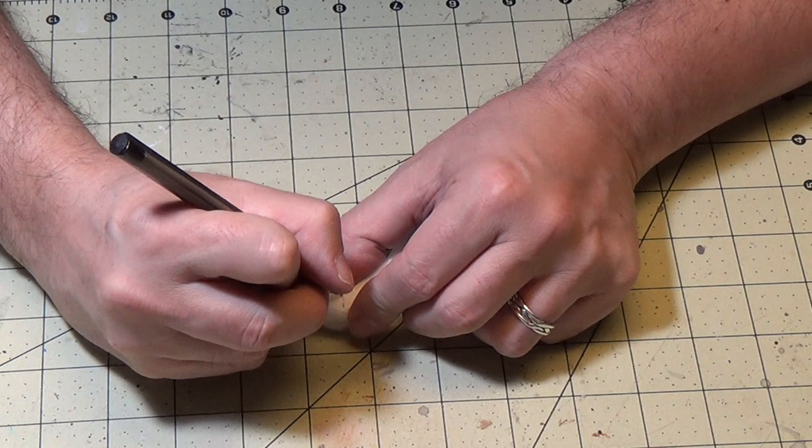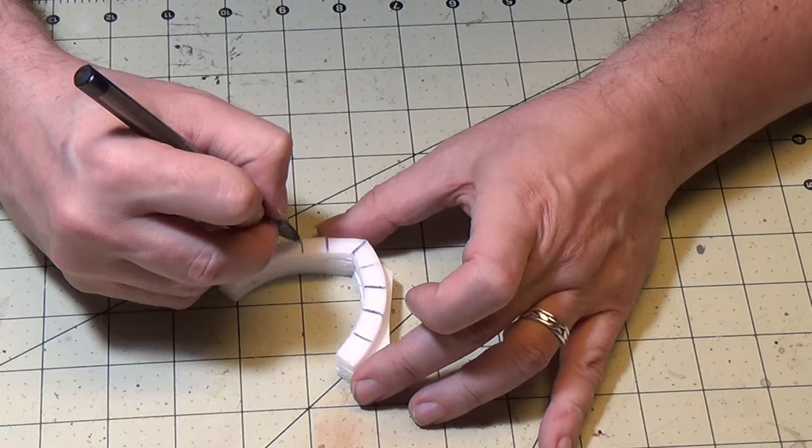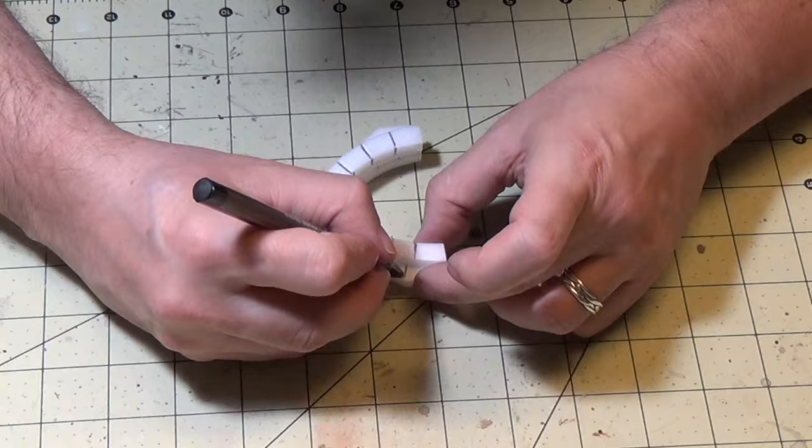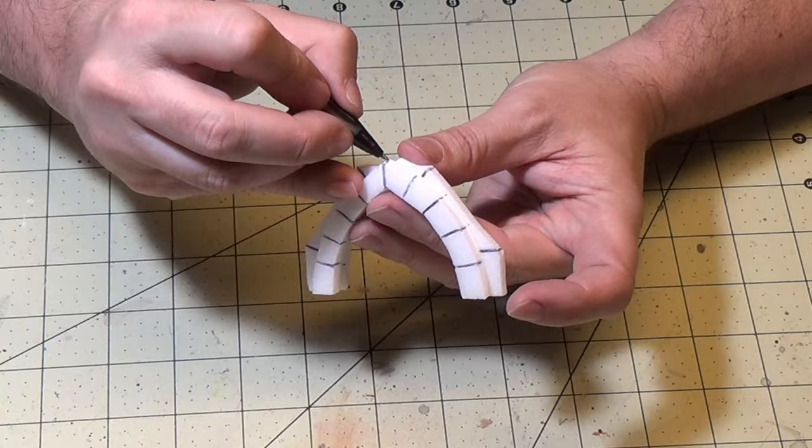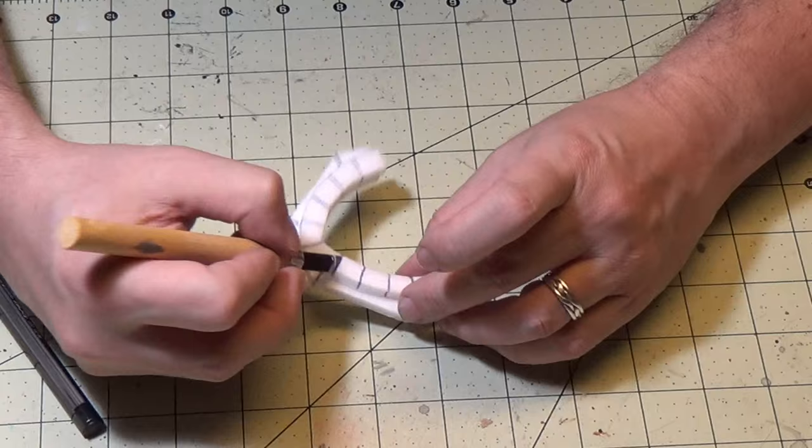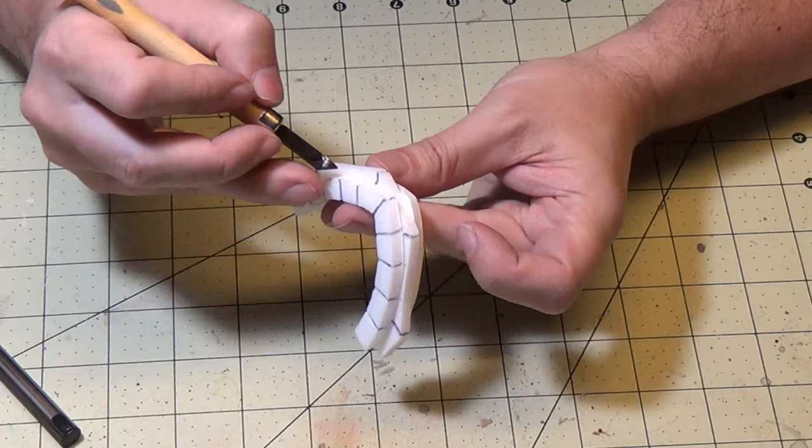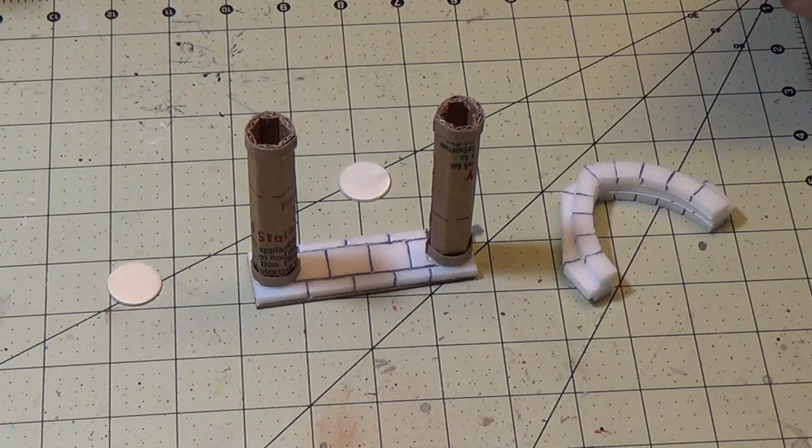Now for the arch I'm going to do some detail on that. So I'm just pressing in with my ball point pen. I want to get the brick work on here. Just easy enough to do. Go around, do it all. I'm going to use my carving tool just to press in a little bit more, accent those a little more.